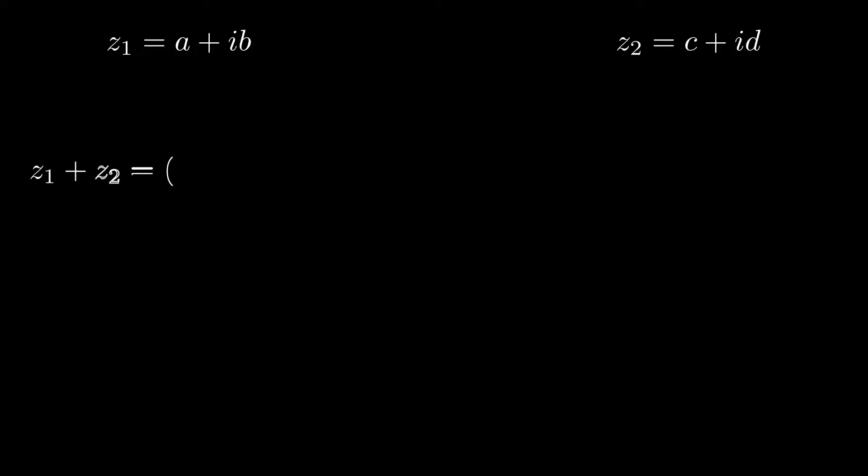Then the addition z1 plus z2, all we need to do is add the real parts together and add the imaginary parts together along with the common factor i. So z1 plus z2 is equal to a plus c as the real part plus b plus d as the imaginary part times i.